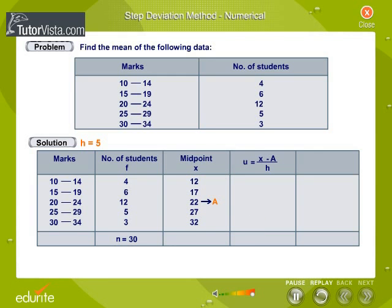Now we need to calculate the deviation u. Let the assumed mean be a is equal to 22. Formula for deviation u is equal to x minus a by h. Therefore, u is equal to x minus 22 by 5.